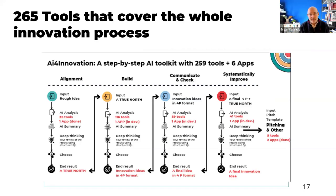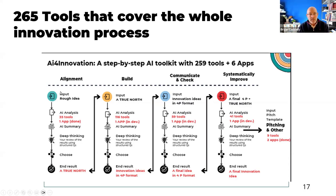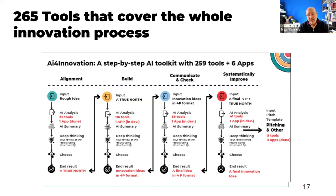We also built a toolkit with 265 tools covering the whole innovation process. An innovation process can be described many ways — build, communicate, check, and systematically improve; or plan, do, study, act; or the design thinking process. We look at four stages: defining a problem, building ideas, communicating and checking those ideas, and improving and pitching them out. What's exciting is how this brings humans and AI together to do things faster and better than you could ever imagine.